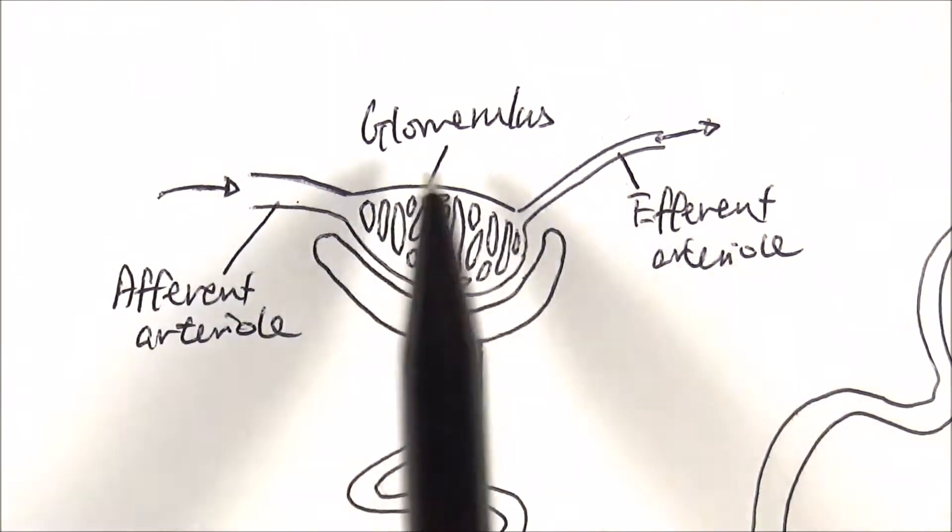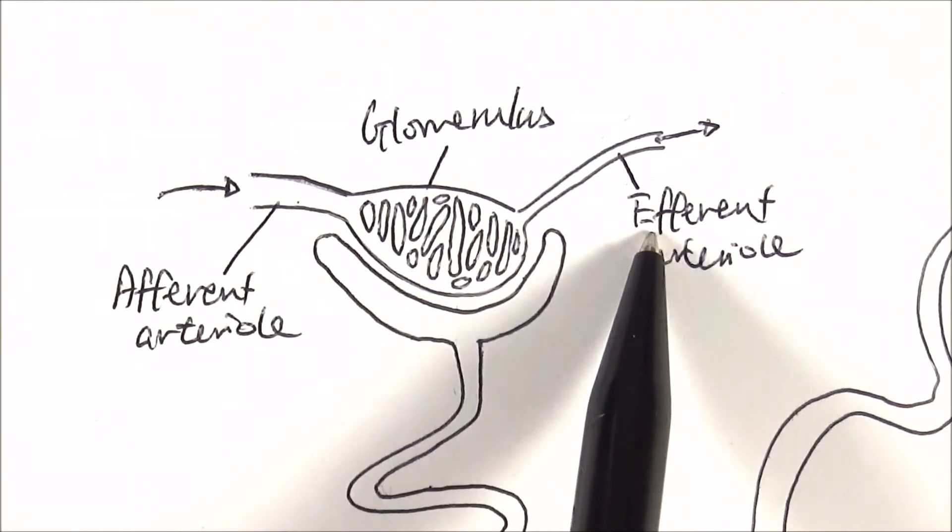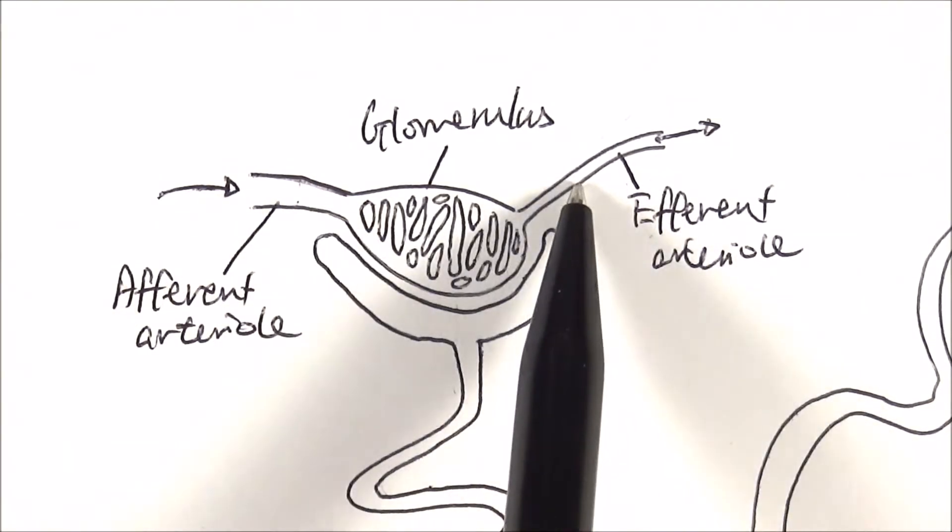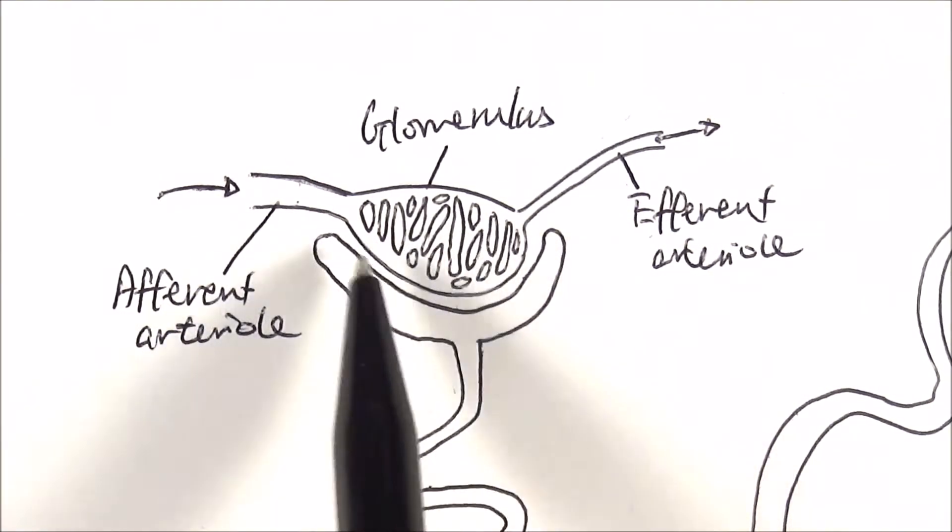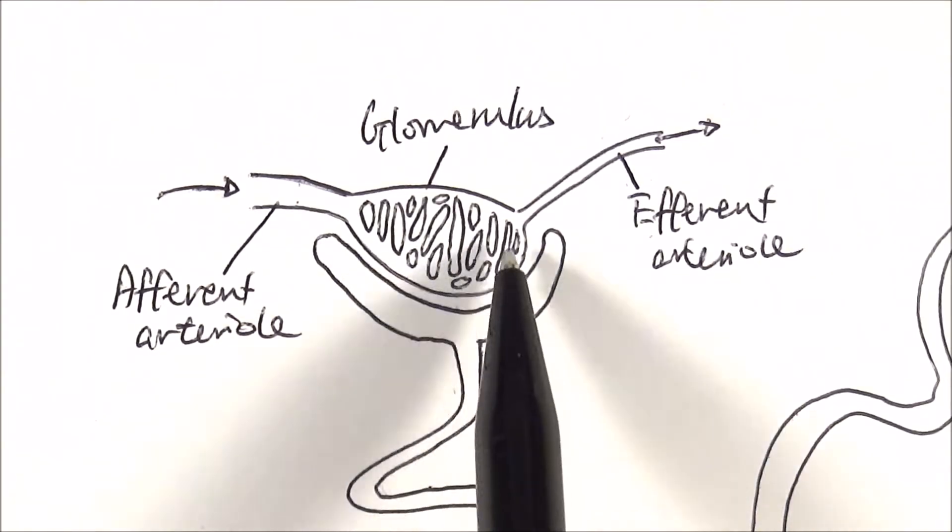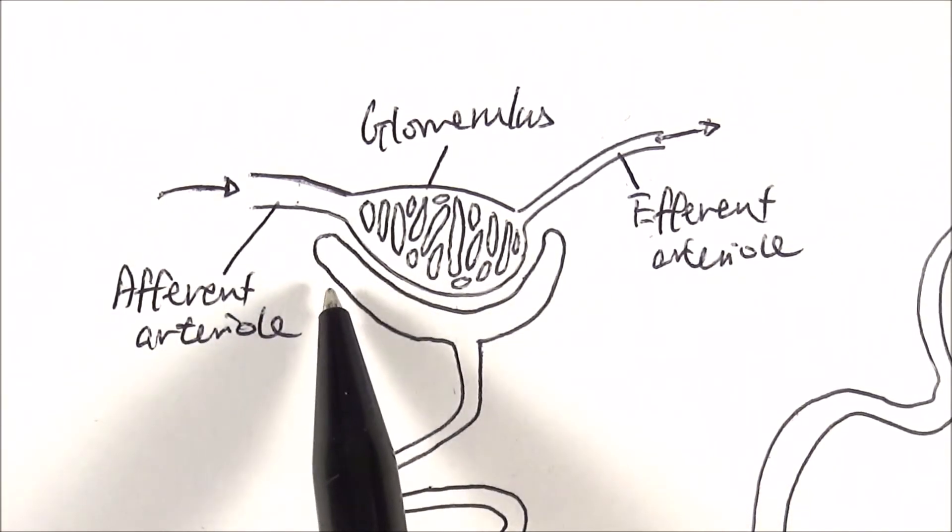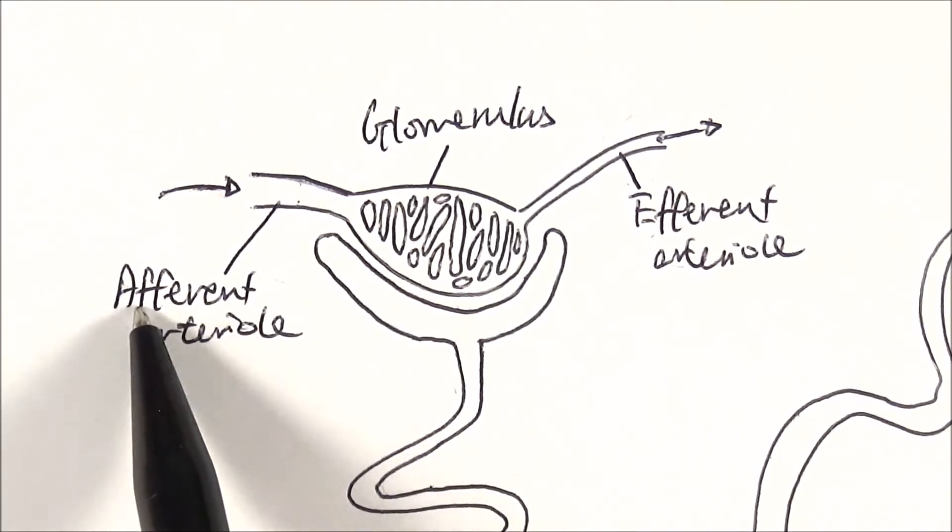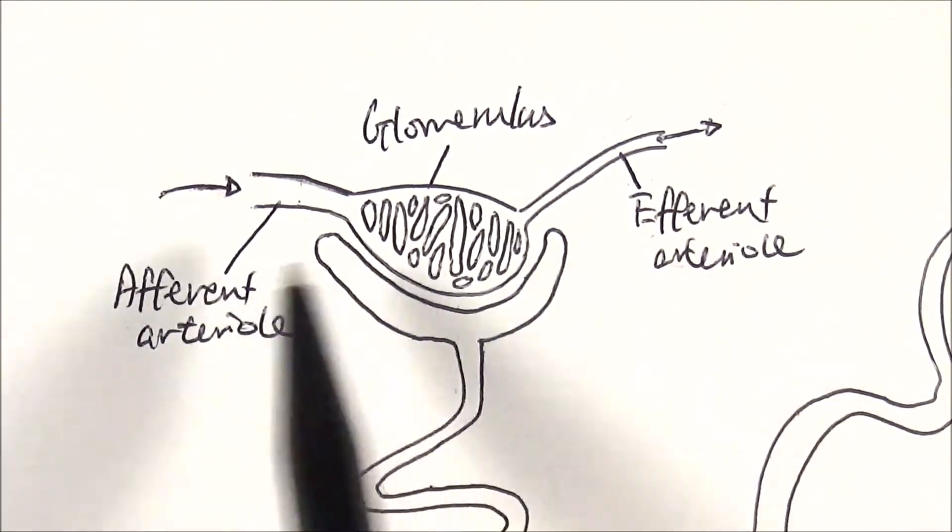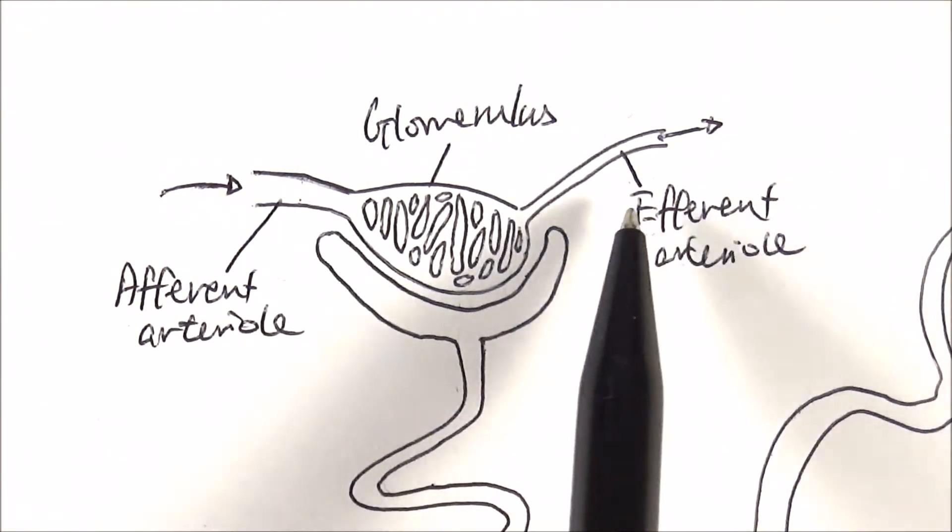As you can see here there are slight differences between the afferent and the efferent arteriole. Their lumen size is slightly different and this creates a filtration pressure inside the glomerulus which forces the substances out. Again we'll talk about it more later on. So just remember that A is before E, so afferent first and efferent later on.